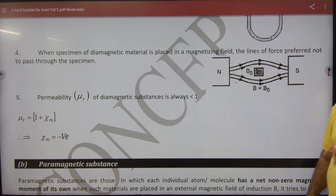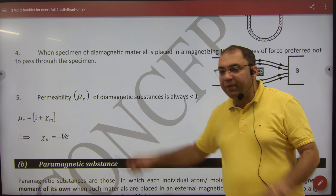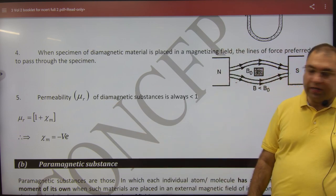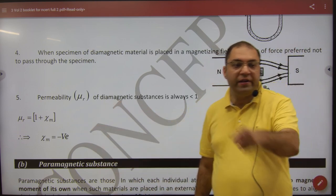If you trace their magnetic lines of force, then no line will give you, external field will oppose. Next, note their permeability in formula booklet. Their permeability μᵣ is always less than 1. Property will be taken.